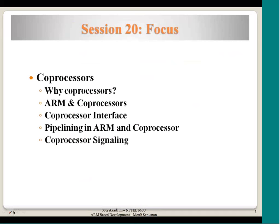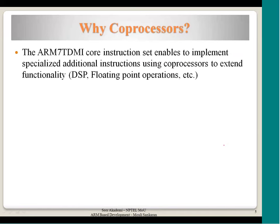That is the intent of going for a coprocessor. In this lecture we will talk about the ARM coprocessor interface, and in the next lecture I will talk about the instructions which are related to coprocessor. Then I will explain floating point format, followed by a lecture giving insight into what is inside a vector floating point processor. Additional specialized instructions can be added using coprocessors to extend the functionality - it could be DSP or floating point operations.